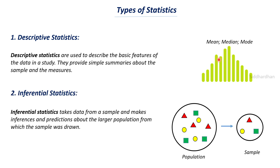Inferential statistics takes data from a sample and makes inferences and predictions about the larger population from which the sample was drawn. In many cases the population or data set can be very large and we cannot go through the entire data. So we choose some sampling techniques to get a sample from the population, analyze that sample to gain insights and inferences, and use those insights to make future predictions. If you still have doubts, it will become clear through some interesting examples.